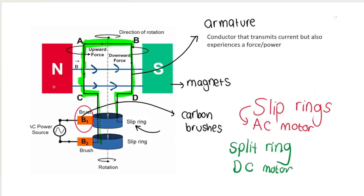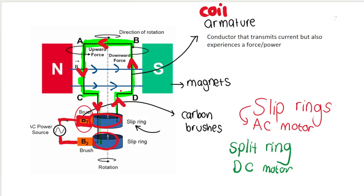In terms of motors, they have different components. The coil, wire, or armature — highlighted here in green — is the conductor that transmits current. You can see the arrows showing the direction of current flowing through the conducting wire. It also experiences a magnetic force because of the motor effect. The current flows along the wire into the slip ring, then from the slip ring into the carbon brush, and then into the external circuit.